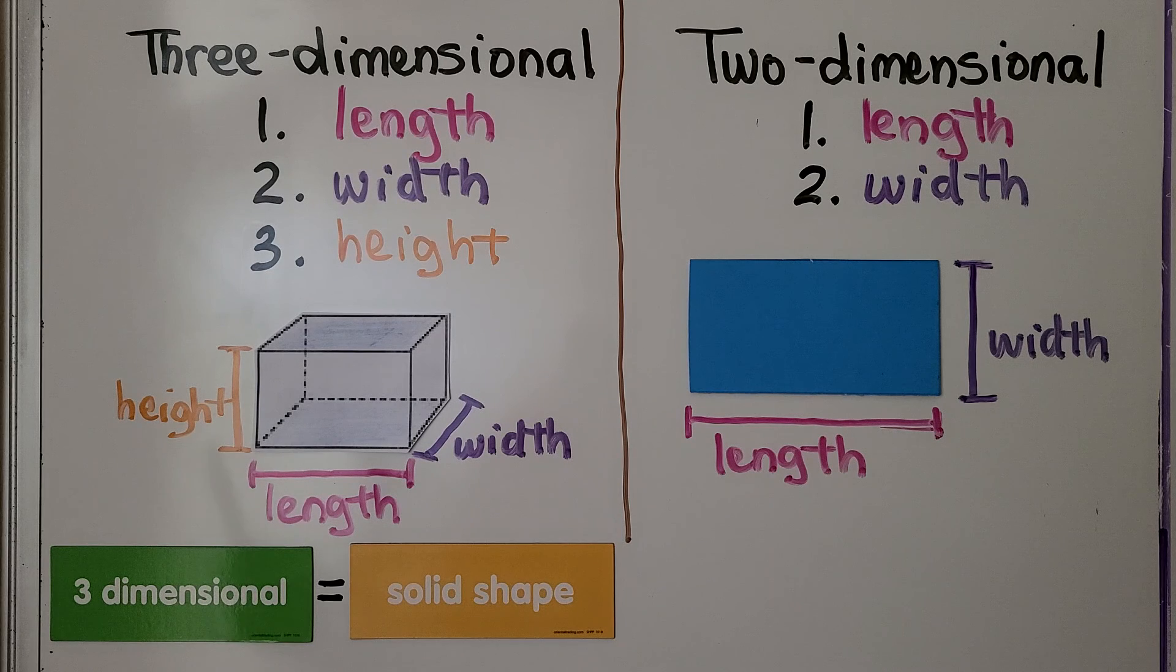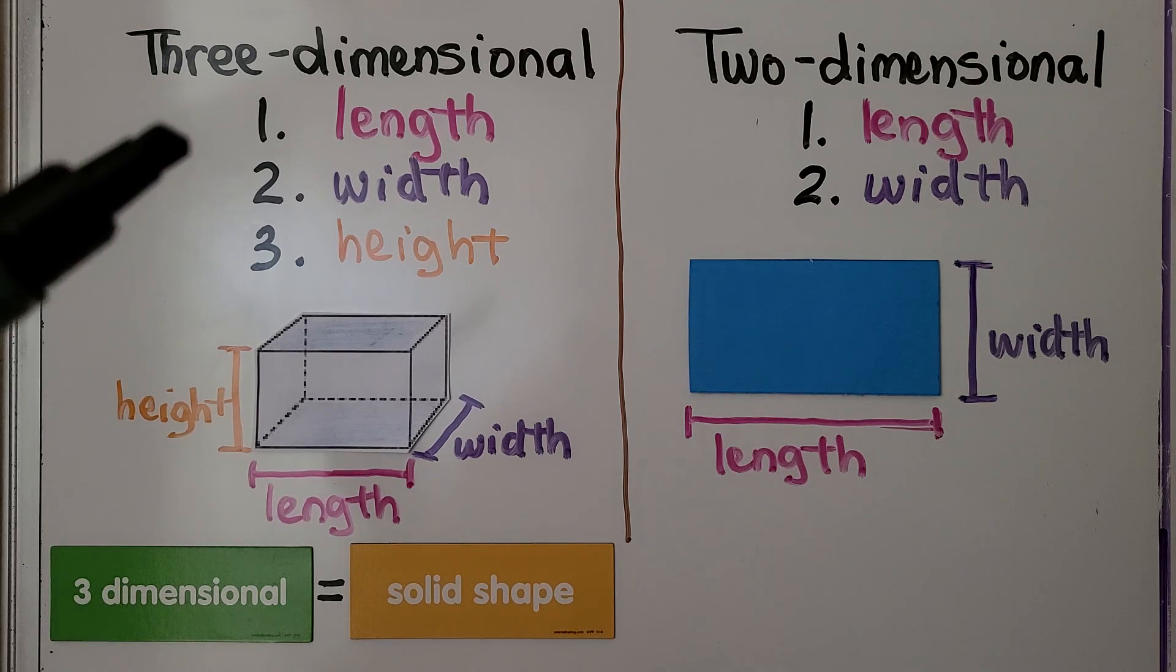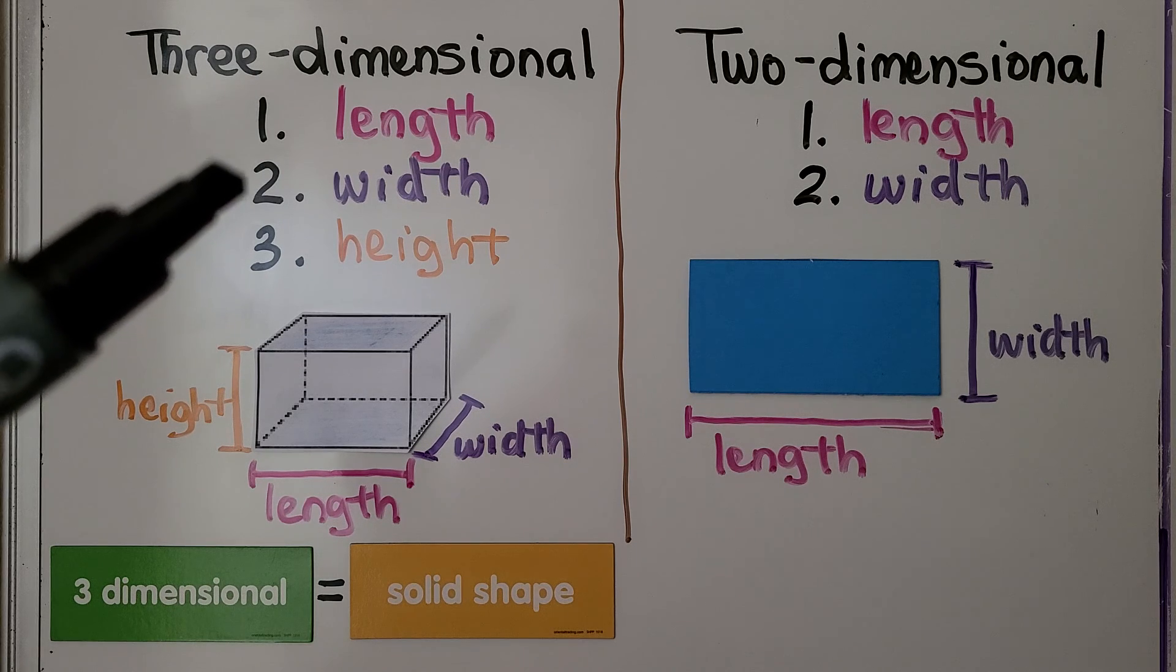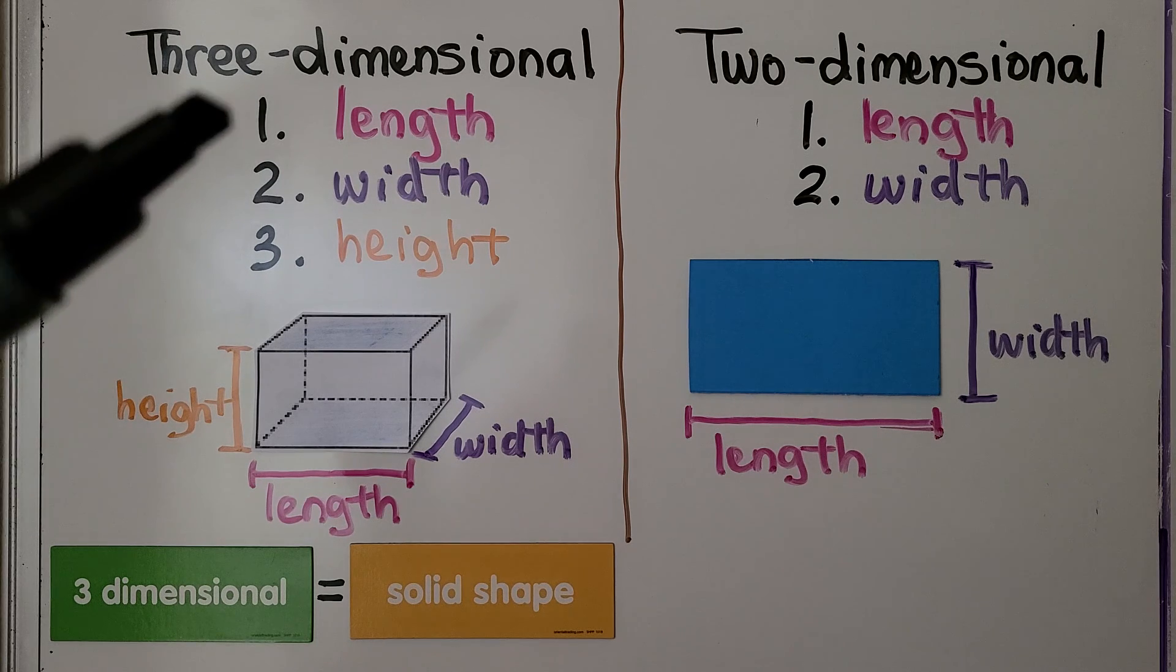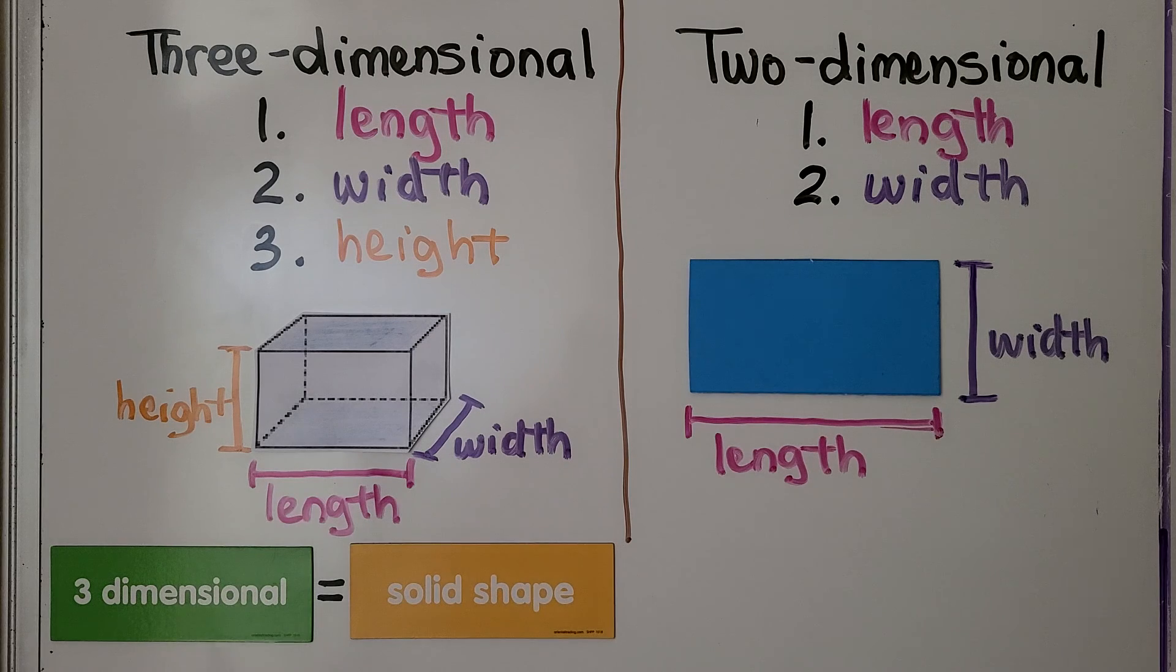Three-dimensional shapes have three dimensions. Dimensions are measures, so the first one is length, the second one is width, and the third one is height. One, two, three. Three dimensions.